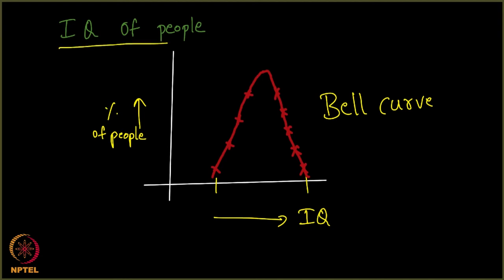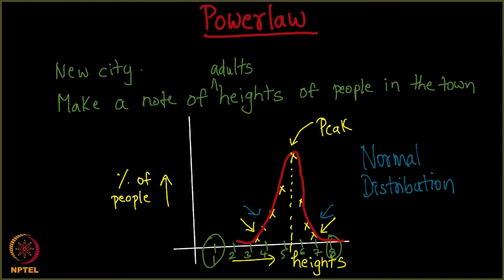So IQ of people forms a bell curve. You can think of many such examples. Weight of people in a town, weight is another such example, IQ being one such example, height being another example.